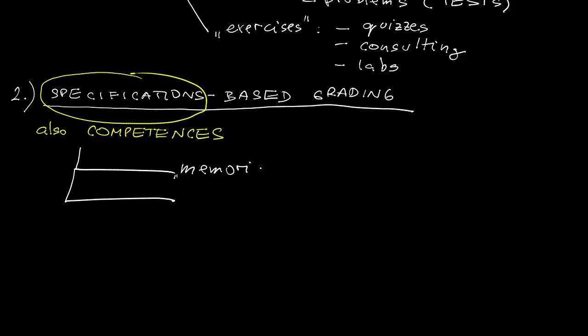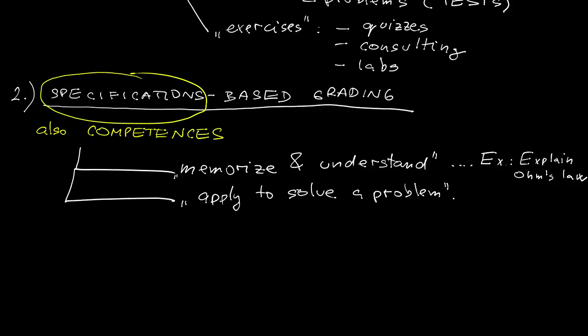First, the first class expresses that you have the knowledge and you have the understanding. The second type of competence expresses that you are capable of using the knowledge to actually solve some problem. Let me show you an example. Consider Ohm's law. The first type of competence means that you are able to explain Ohm's law. The second type expresses that you are capable of using Ohm's law to actually solve some problem, to find the values of voltage or current or resistance given the other two.